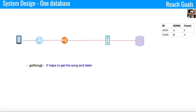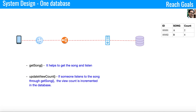The application server has three important web services. The first is get song, which helps to get the song and listen. The second is update view count — if someone listened to the song, the view count is incremented in the database. The third is get top 10 songs, which sorts the view count and returns the top 10 songs shown in the UI. Keep in mind that in this approach we have near real-time data, but the database will not scale if billions of users are listening at the same time. We cannot meet non-functional requirements like scalability, performance, and high availability.